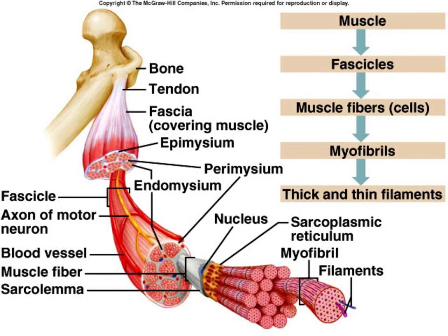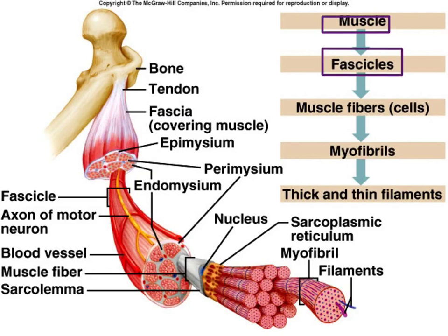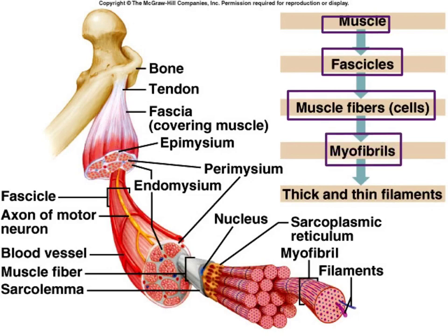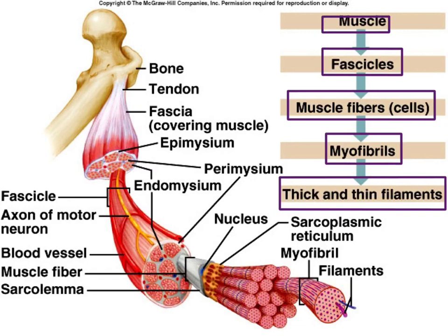Here is a general breakdown of how muscles are organized. An entire muscle is made up of bundles of muscle fibers called fascicles. The muscle fiber is the actual muscle cell, which is further made up of smaller fibers called myofibrils, and myofibrils are made up of two types of thinner structures called myofilaments — the thick filament myosin and the thin filament actin.